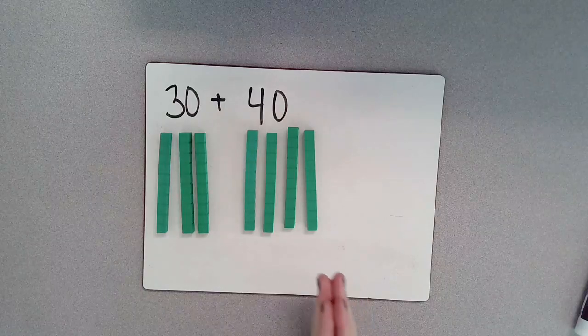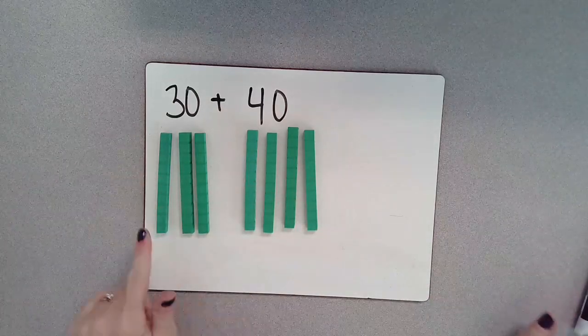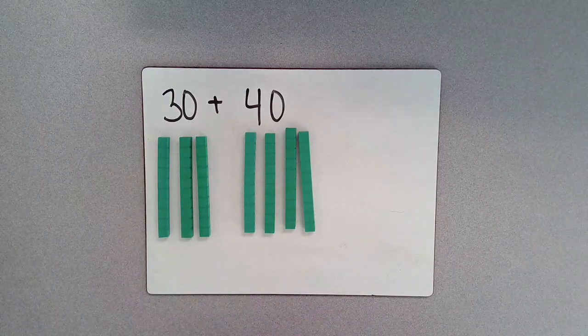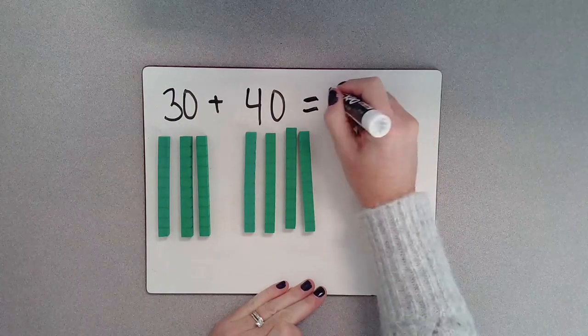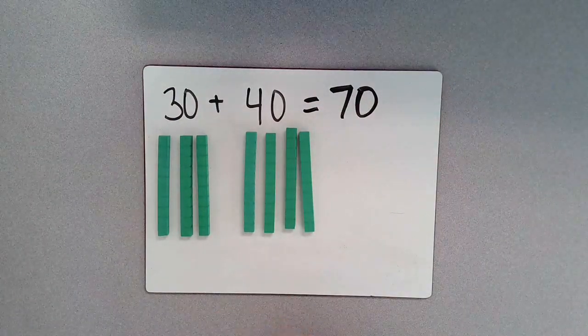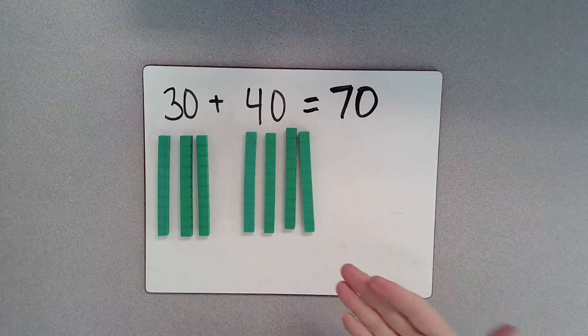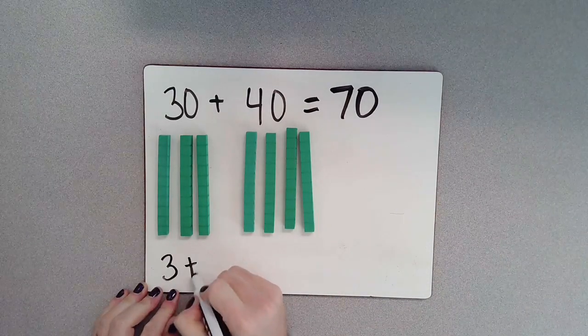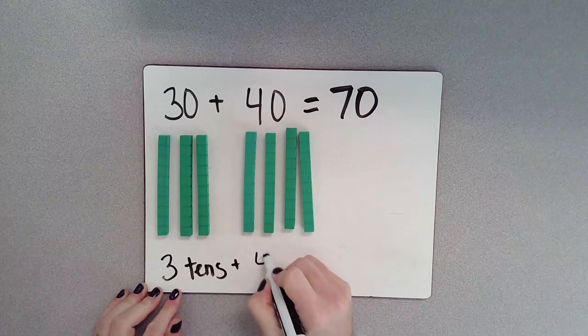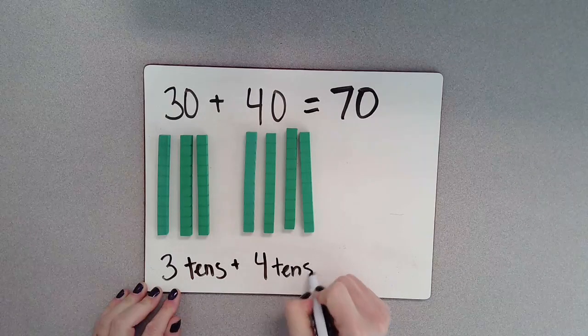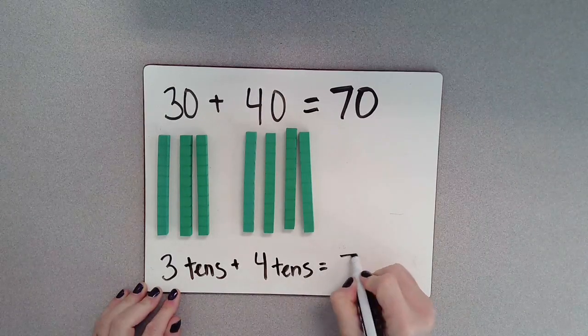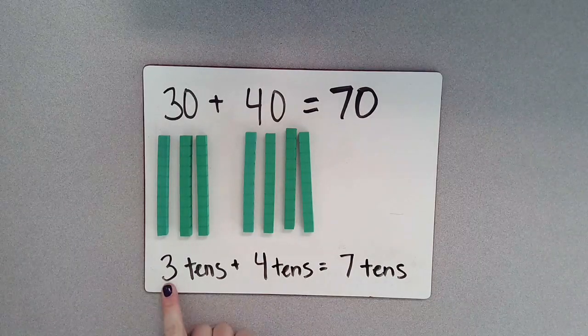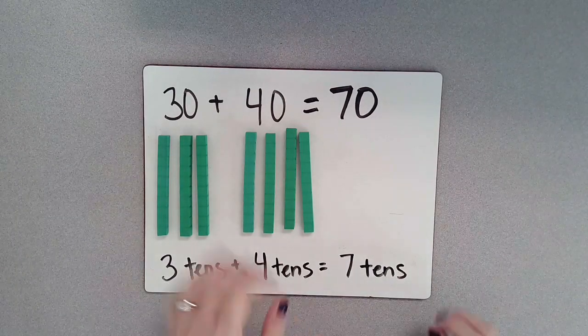and I'm going to count up to try and figure out what this would equal. So 10, 20, 30, 40, 50, 60, 70. So I know that 30 and 40 together give me 70. And I counted up my 10s to be able to do that. So 30 or 3 10s or 40 or 4 10s gives me 7 10s. And you'll notice that 3 and 4 together are number partners of 7.